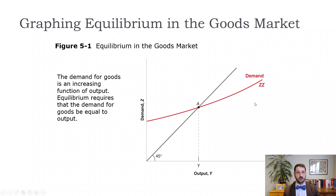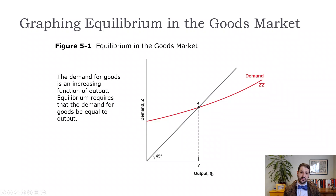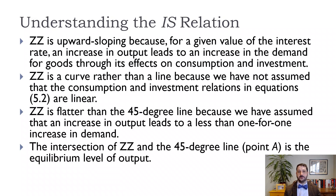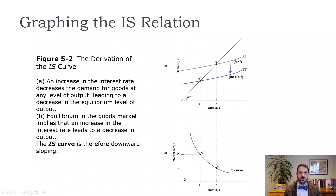This is similar to what we had in chapter 3, except the demand curve now has a slight curve rather than a straight line, because not only consumer spending but also investment spending depends on output. We still have the upward-sloping demand curve and the 45-degree line, and equilibrium is where the two cross. But what we're really interested in is graphing the IS relationship in output-and-interest-rate space rather than output-and-demand space.